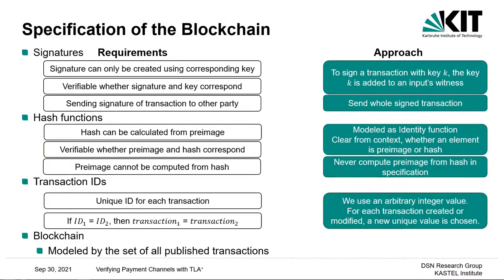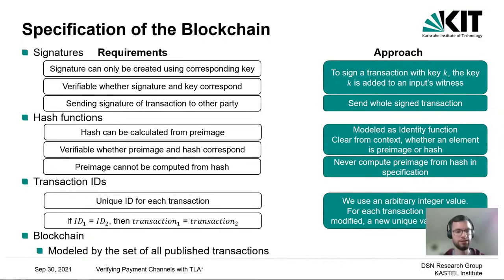For transaction IDs, each transaction must have a unique ID, and if a transaction is modified, its ID changes. In Bitcoin this is implemented using the hash of a transaction as its ID. In our specification, we use an arbitrary integer value, and the specification assigns a new ID whenever any part of a transaction is modified. The blockchain is then modeled as the set of all transactions that have been published.